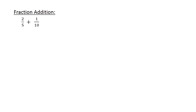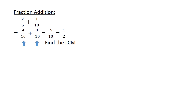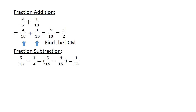Fraction addition: 2 over 5 plus 1 over 10 equals — find the lowest common multiple — 4 over 10 plus 1 over 10 equals 5 over 10, which equals 1 over 2. Fraction subtraction: 5 over 16 minus 1 over 4 — find the lowest common multiple — 5 over 16 minus 4 over 16 equals 1 over 16.